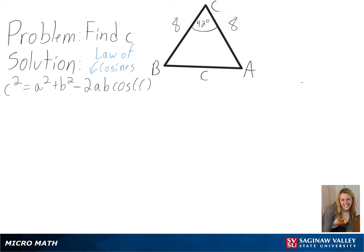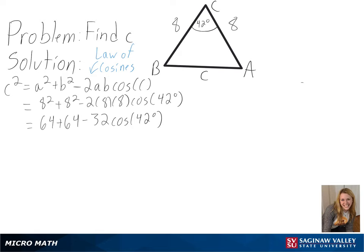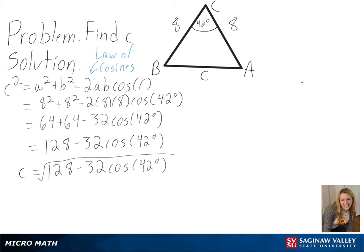So we will first plug in our values, and then we will simplify this as much as we can without rounding, to get C equals the square root of 128 minus 32 times the cosine of 42 degrees. We could also approximate this to get around 10.21 as our final answer.